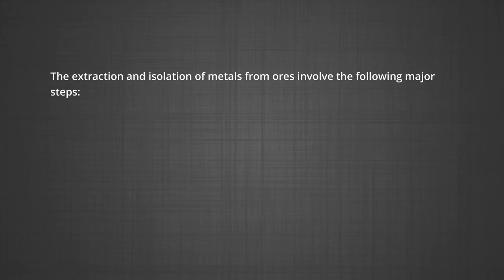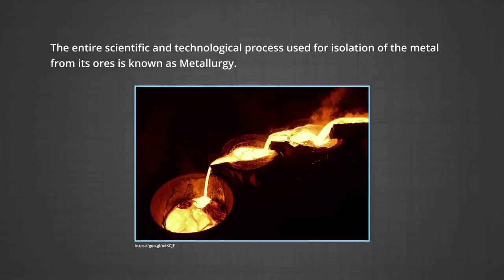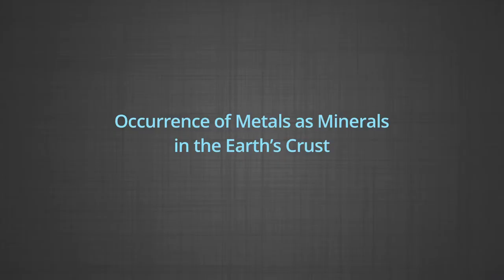The extraction and isolation of metals from ores involves the following major steps: concentration of the ore, isolation of the metal from its concentrated ore, and purification of the metal. The entire scientific and technological process used for isolation of the metal from its ore is known as metallurgy. In the present episode, we shall focus on the first and important step of metallurgy, that is concentration of ore, and describe the various steps involved in the effective concentration of ore.